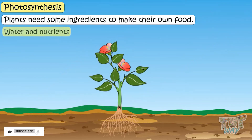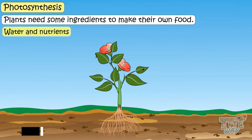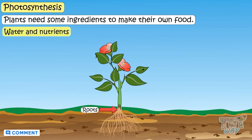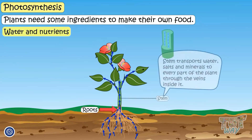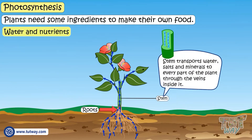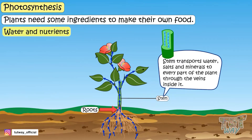Second are water and nutrients. Plants get water and nutrients from the soil. Roots absorb the water and nutrients from the soil, and the stem transports this water, salts, and minerals to every part of the plant through veins inside the stem.